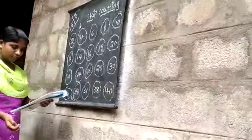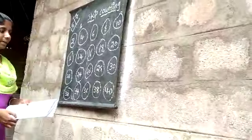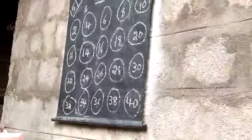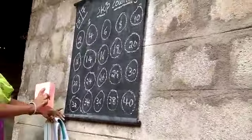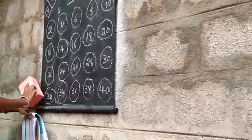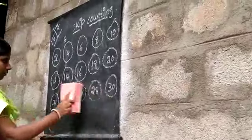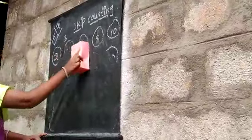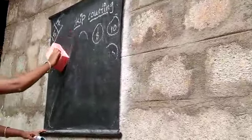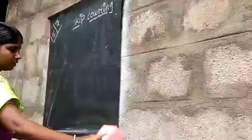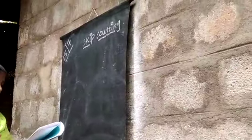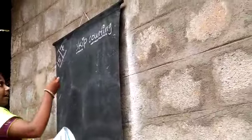Up to how many numbers do you have to write here? 100 numbers you have to write. Okay. See the other one — skip count by 5.